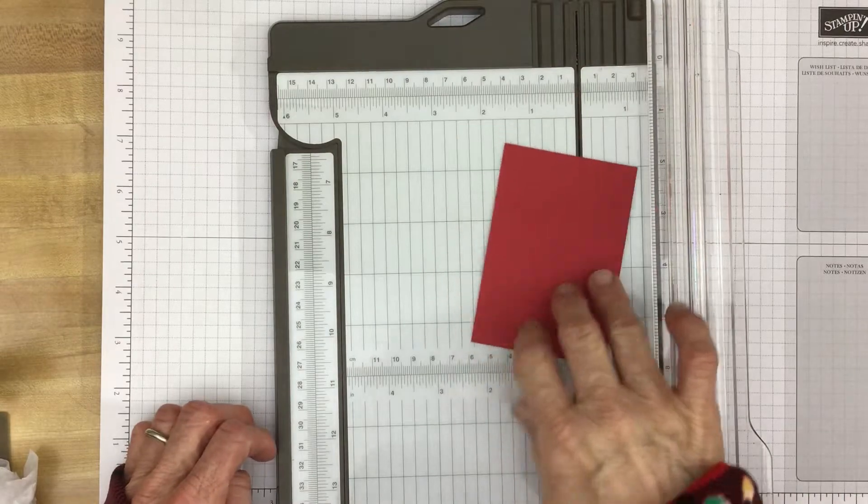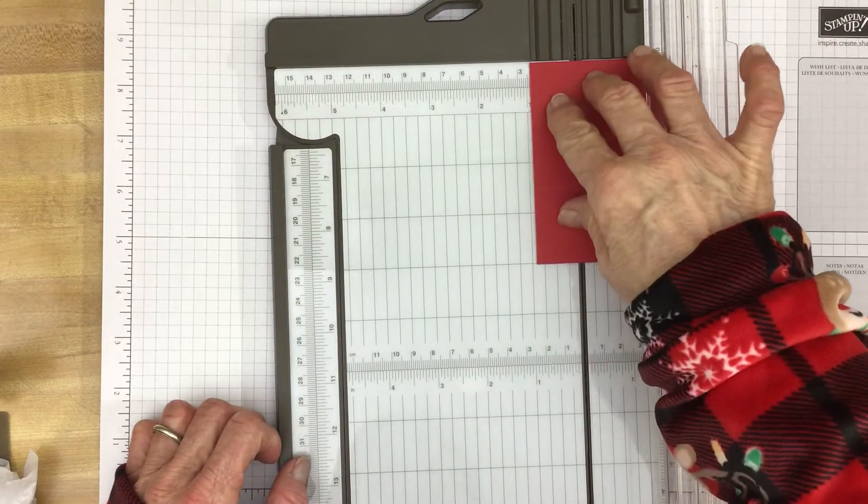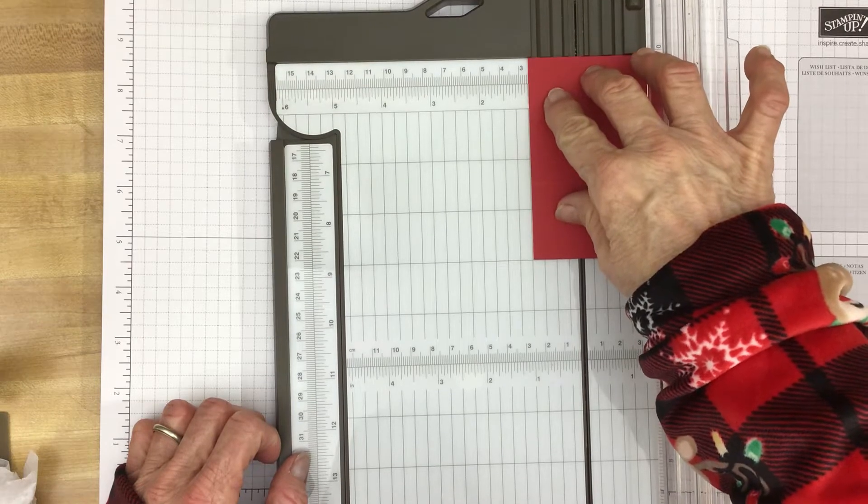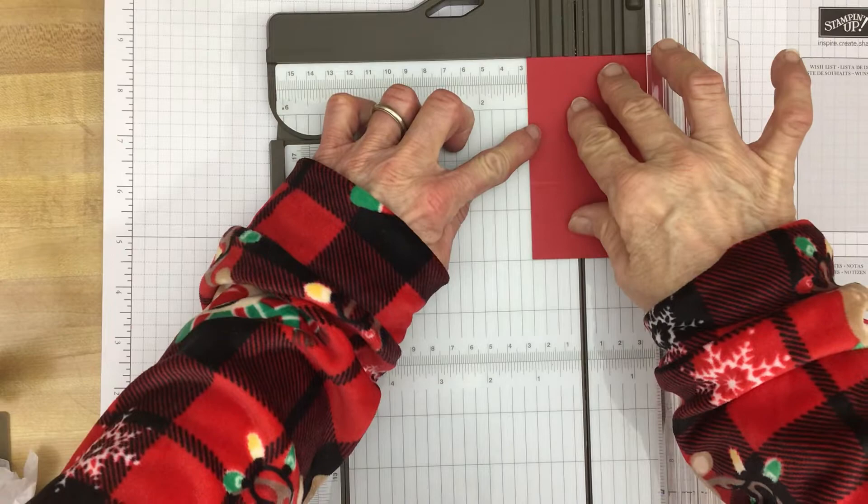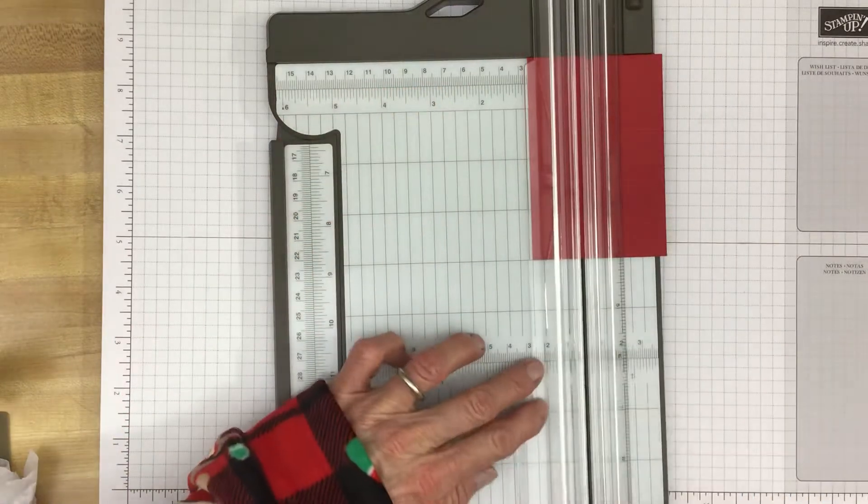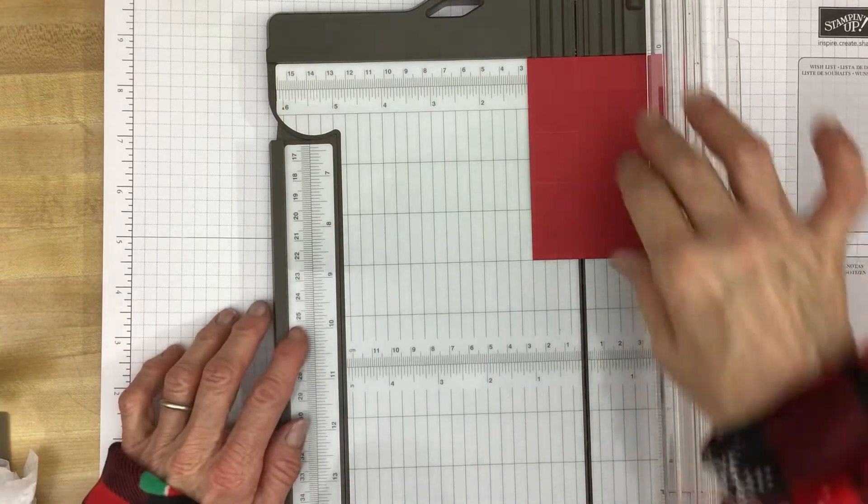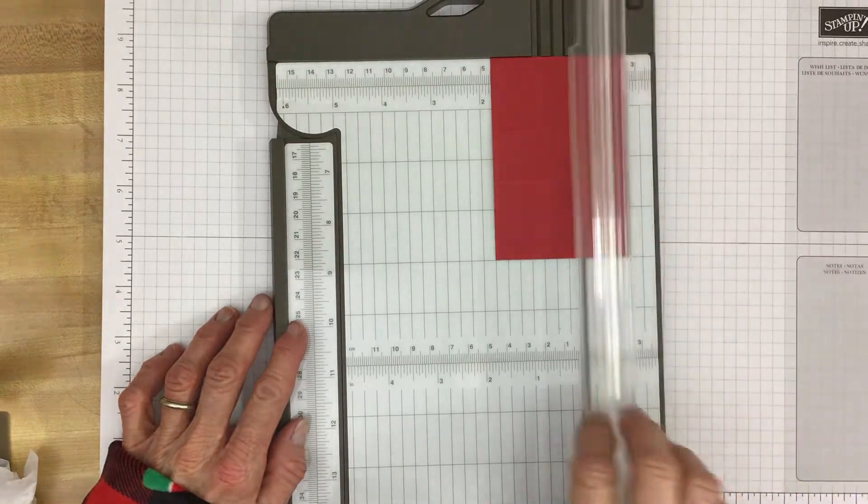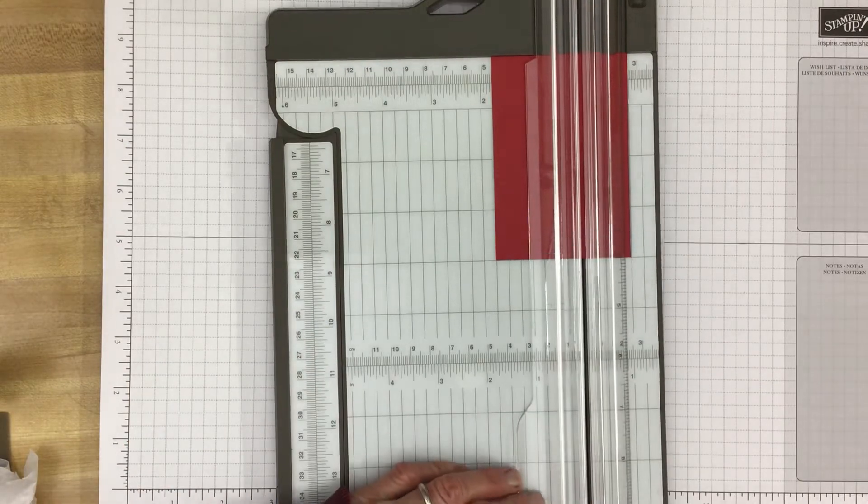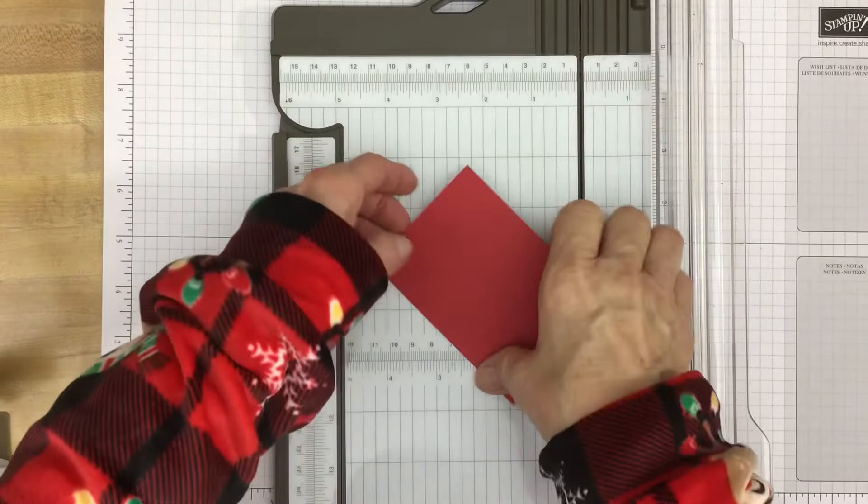And then we're going to score again at two and a half. Then we'll turn it to the two and three quarter side and we're going to score at one, one inch maybe. There we go. And also at one and three quarter inches. And that's the scoring.